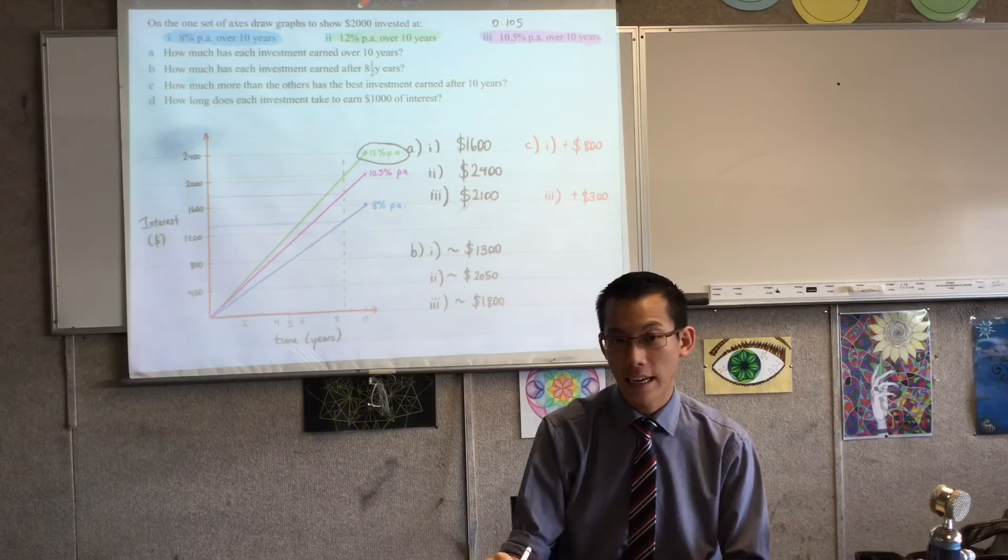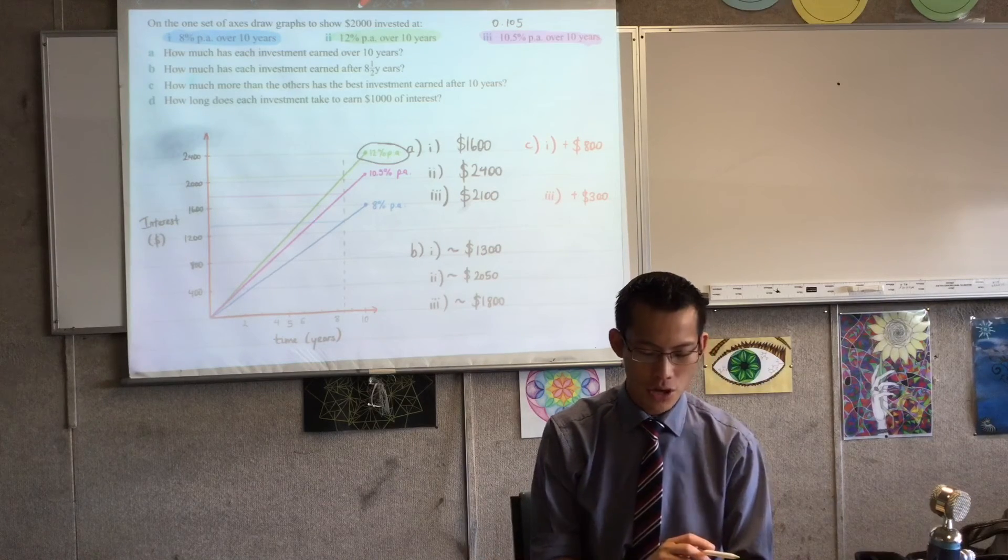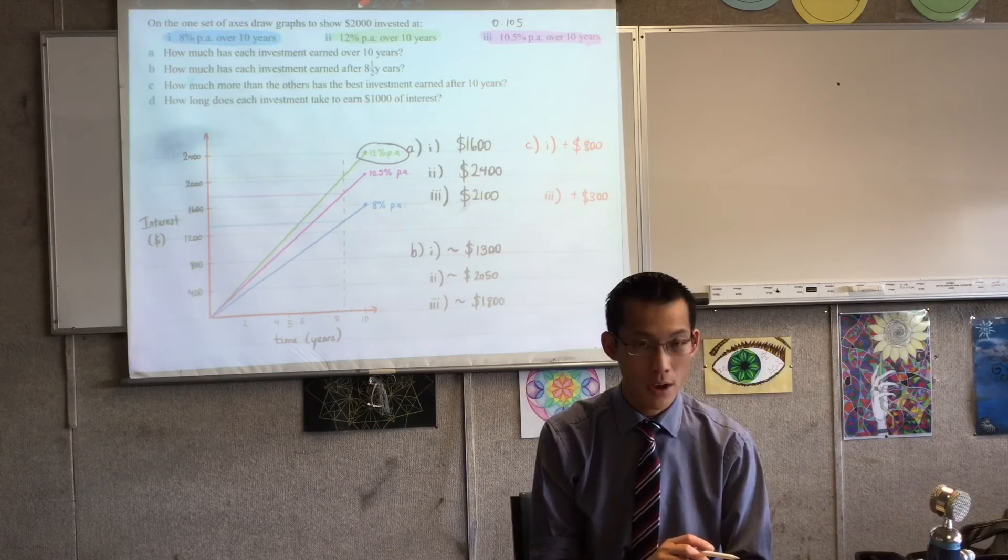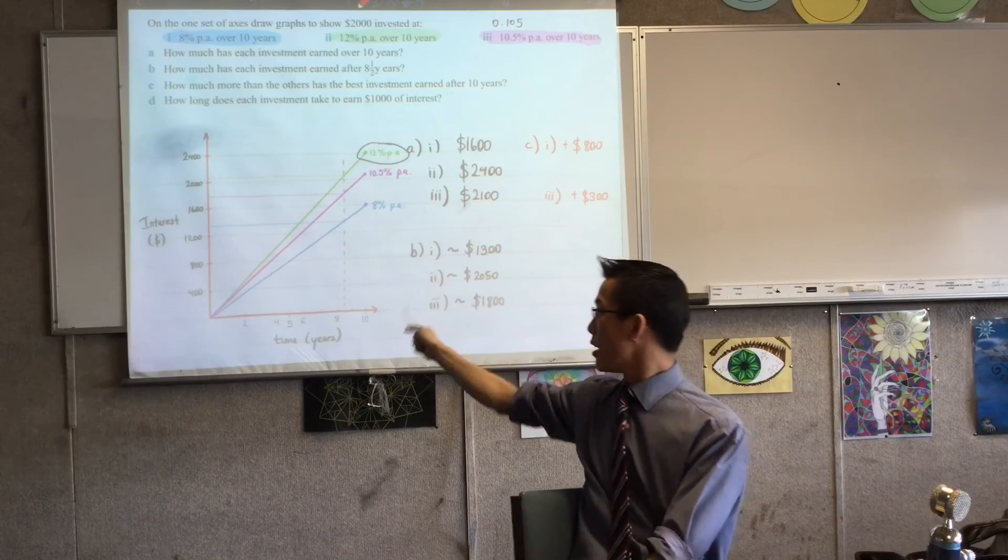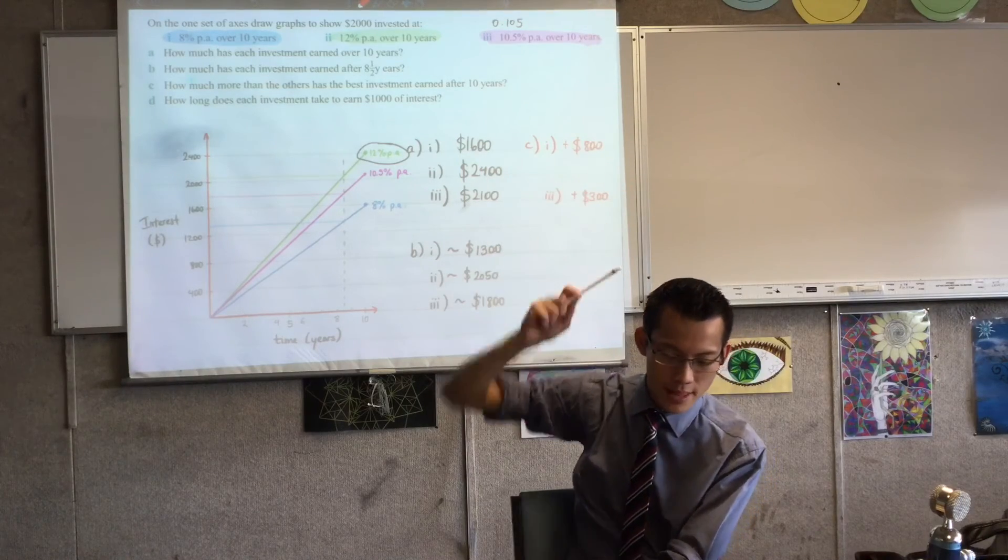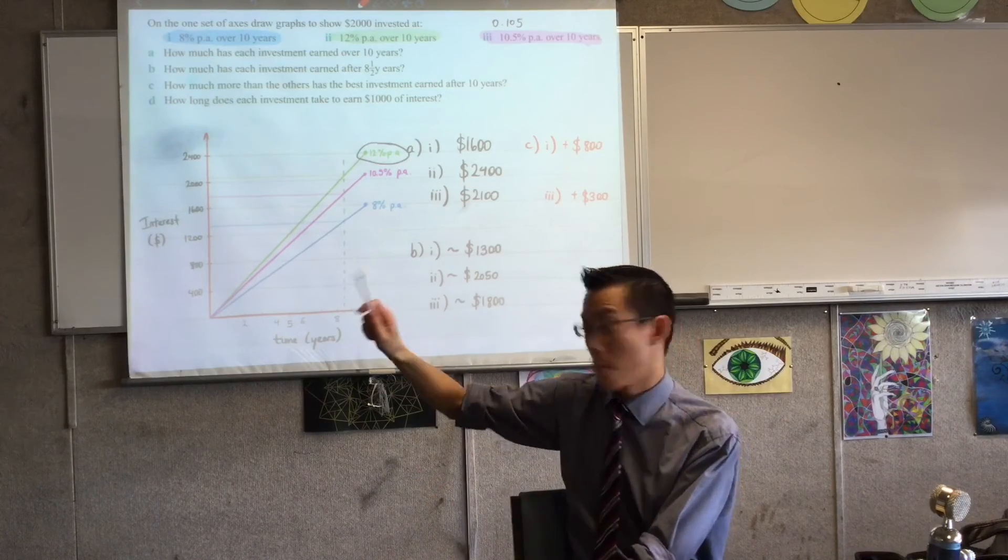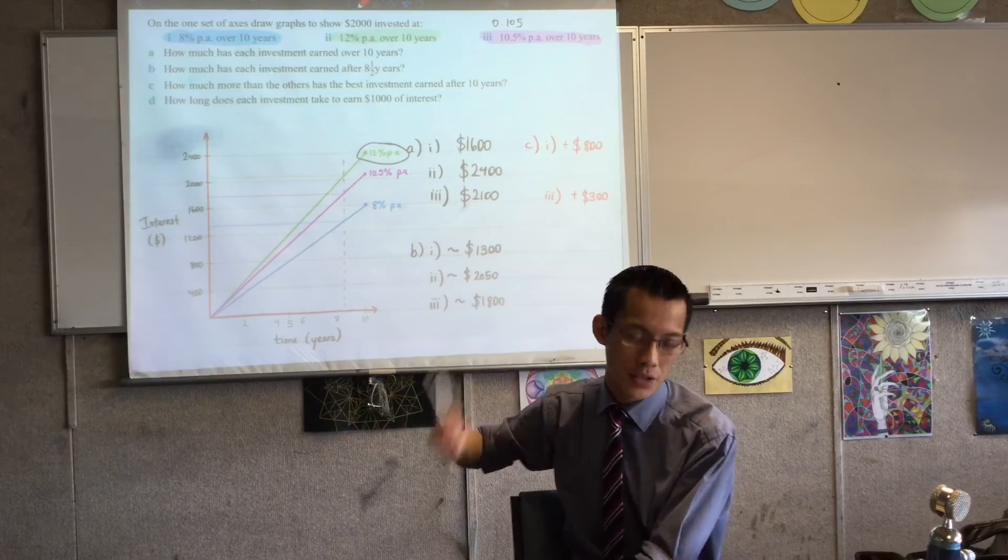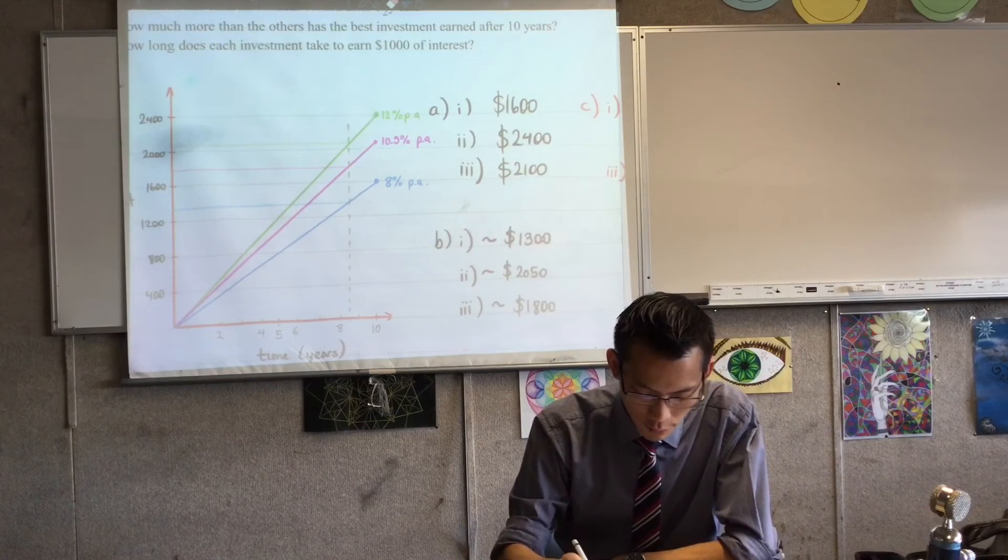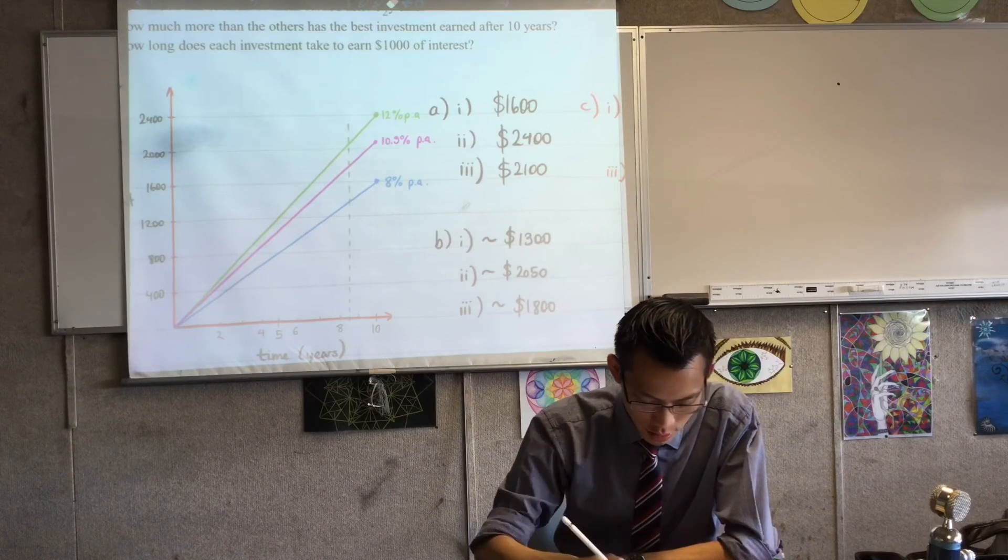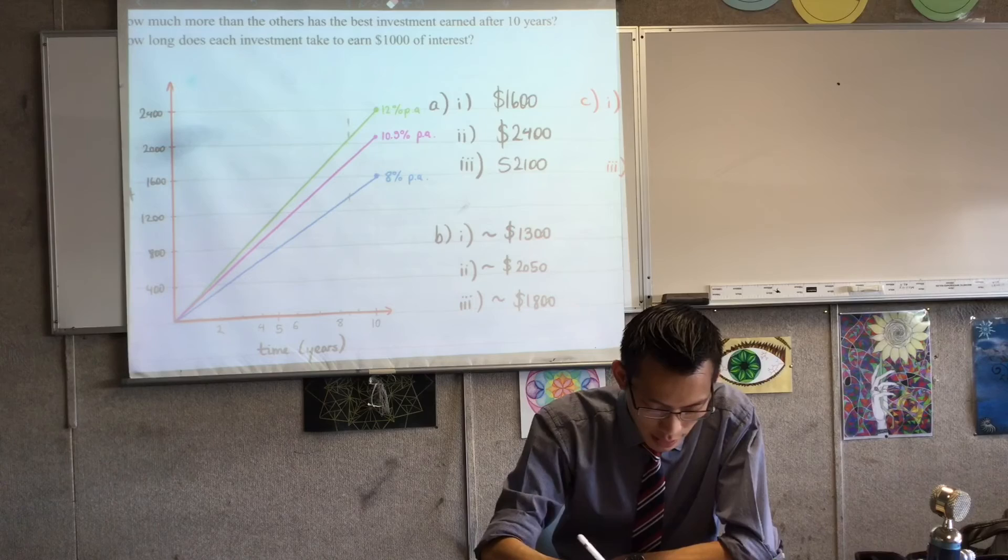Last question, and this is again going to require drawing on some lines. How long does each investment take to earn $1,000 of interest? Just like before, how I drew a vertical line up and I said, same time, tell me all the graphs and the different money. This time, I'm going to go from the horizontal axis and say, I want the same money that goes across and I want to work out the different times. So that I'm not confusing myself, I'm going to take a few of my lines off here. So I'm going to get rid of all of these construction lines and also this vertical line.